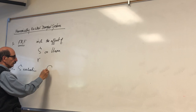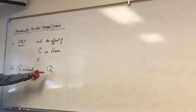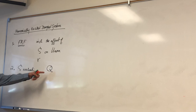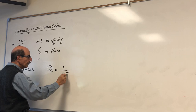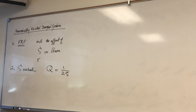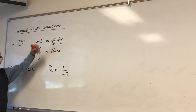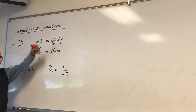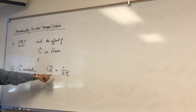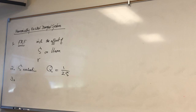We introduced the concept of Q — the high-Q or low-Q system. Q was the approximate maximum value of the frequency response function. The larger zeta is, the smaller Q; the smaller zeta, the larger Q. The peak value of the frequency response function is an easy way to find the damping ratio in the system.